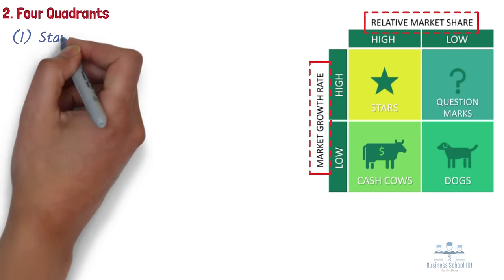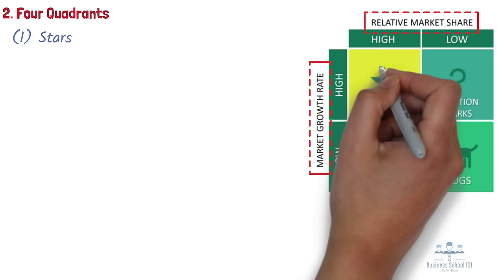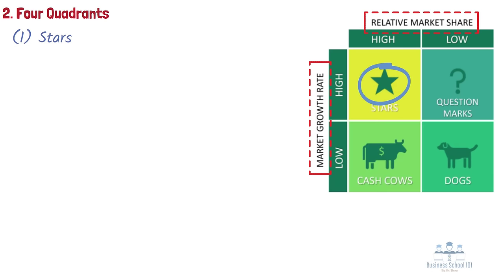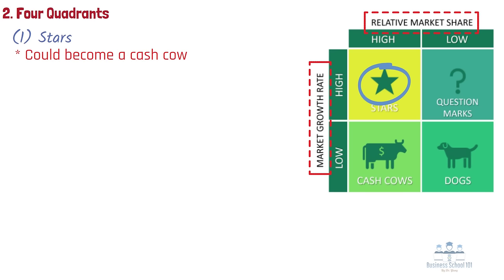Number 1: Stars. Stars are high-share, high-growth products, and they are highly competitive in the category. They may have been expensive to develop, but are worth spending money on for promotion, given the long extent of their product life cycle. If successful, a star will become a cash cow when the category matures.